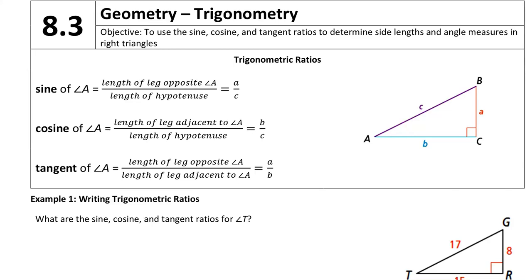So in this lesson, we're going to break it up into two parts. The first part, I just want to teach you the trigonometric ratios and how to set them up. In the next part of this lesson, I'm going to show you how to solve for sides and angles of a triangle using these ratios.